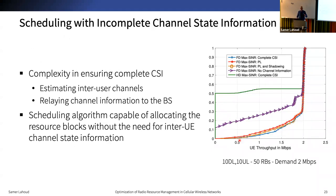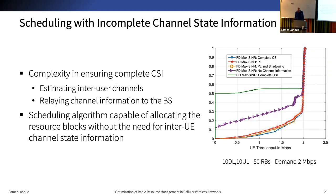Full-duplex networks need information on the radio channel between users, which is not available with current wireless networks. We assess the importance of this information on schedule quality. With complete CSI we achieve the best performance; without any inter-user channel information there is a significant gap. Adding only path loss information improves the schedule quality. Importantly, full-duplex regardless of estimation errors is always substantially better than the half-duplex counterpart.